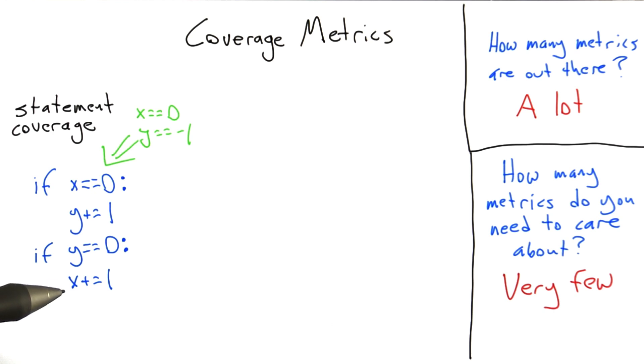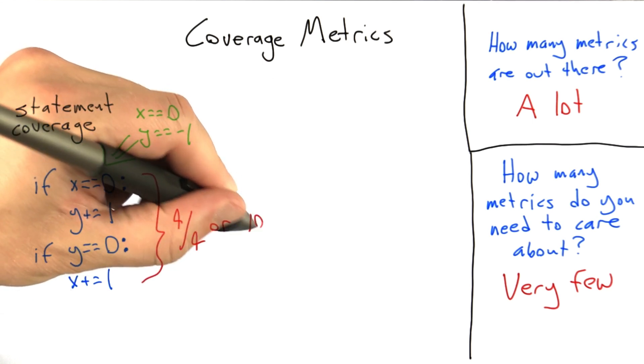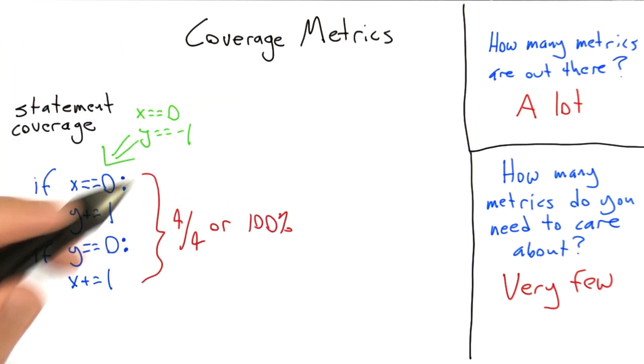There are four statements in this code fragment. If we enter this code fragment with x equals 0 and y equals minus 1, all four will be executed, so this will give us a statement coverage of 100%. So that's pretty obvious.